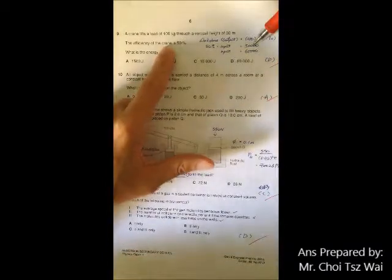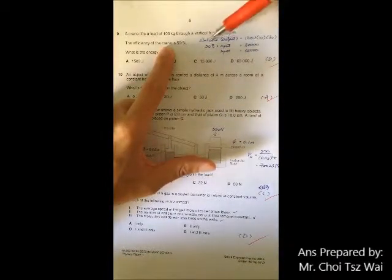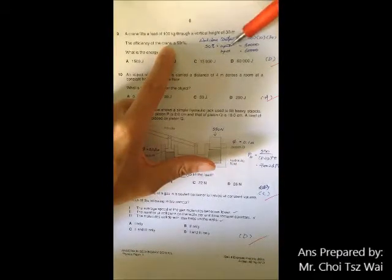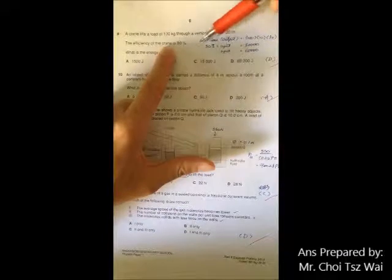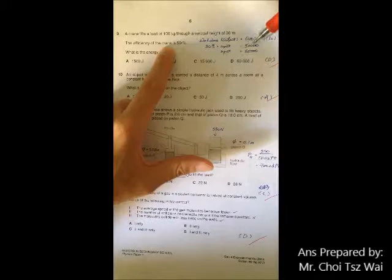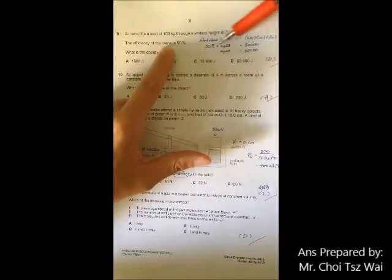So the output equals 50 percent of the input, and the output is 30,000. So once you have this equation set up you can calculate the input. Question 10 - you need to understand that